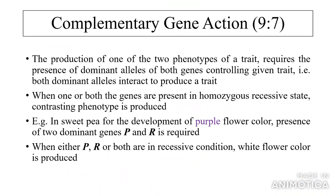Complementary gene action: 9:7. The production of one of the two phenotypes of a trait requires the presence of dominant alleles of both genes controlling the given trait — that is, both dominant alleles interact to produce a trait. When one or both genes are present in homozygous recessive state, the contrasting phenotype is produced. Example: in sweet pea, purple flower color requires two dominant genes P and R; when either P, R, or both are in recessive condition, white flower color is produced.